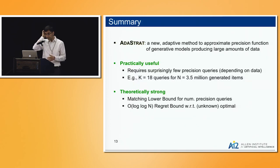In summary, we have introduced AdaStrat, which is a new adaptive algorithm to assess the quality of generative models when they are generating data at a very large scale. It's a practically useful model, and we have some theoretical guarantees to back up that it's actually doing meaningful things and it's close to what one could do optimally. Thank you very much.